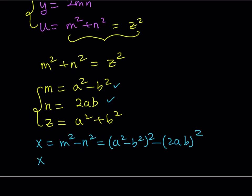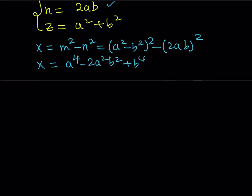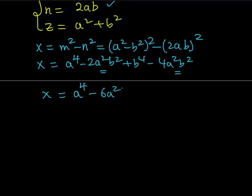Let's simplify. I'm squaring a squared minus b squared, using the formula to get a to the fourth minus 2a squared b squared plus b to the fourth. Then I subtract 2ab squared, which is 4a squared b squared. Combining like terms — negative 2a squared b squared and negative 4a squared b squared — gives us x equals a to the fourth minus 6a squared b squared plus b to the fourth. This is the value of x in terms of parameters a and b.